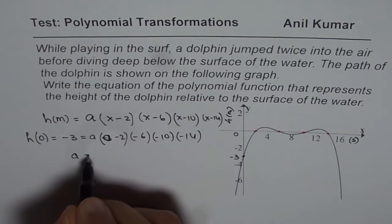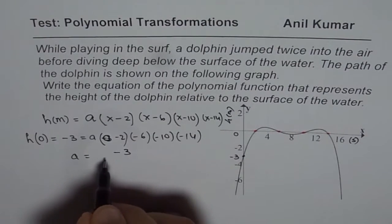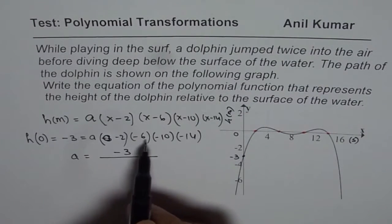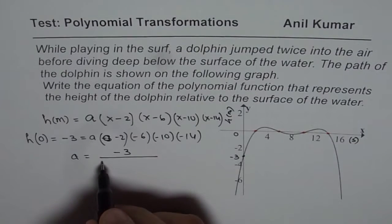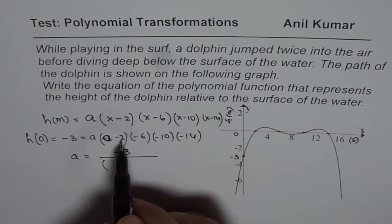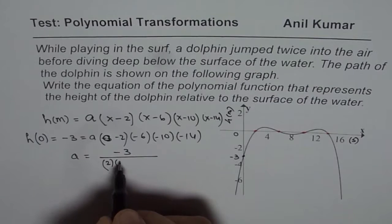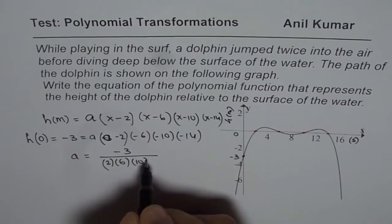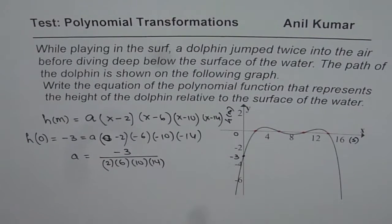So we can say a is equals to minus 3 divided by all these terms. So which is 2 times 6 times 10 times 14. So that is how you can get the value of a.